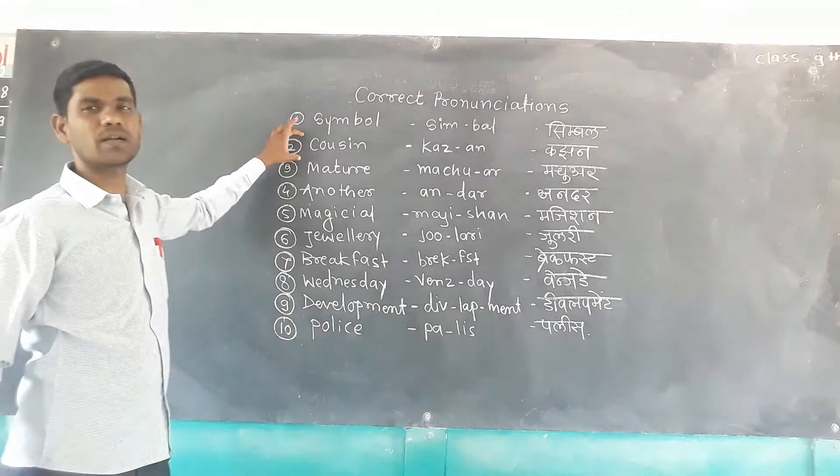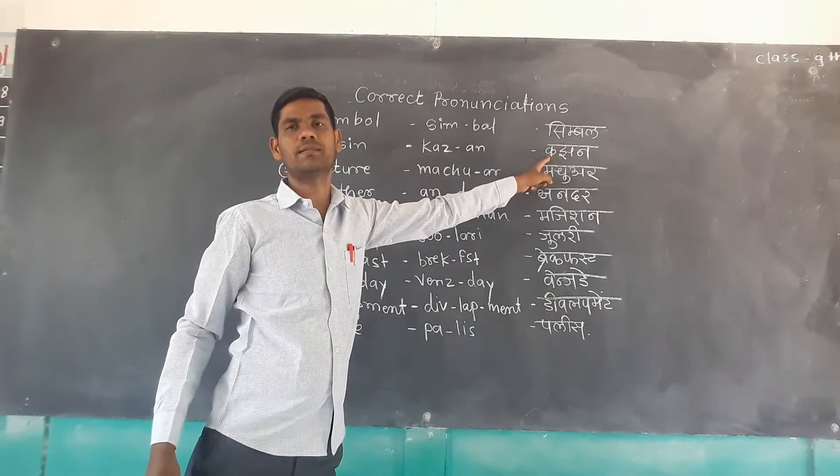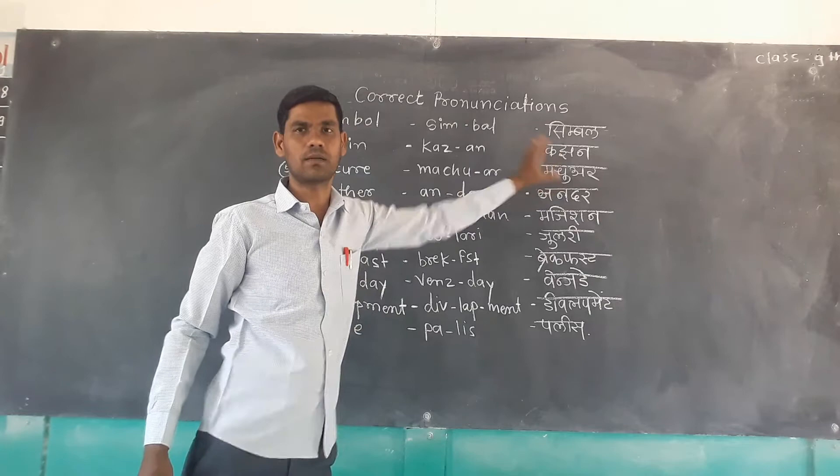The second word — we pronounce it as 'Kazim,' but that is not correct. The correct pronunciation is 'Kazan.' This is the correct pronunciation: 'Kazan.'